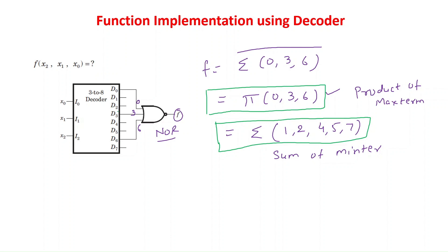I hope everyone gets clarity about decoders and the numerical problems on decoders. In the next video, we will see how to design higher order decoders with the help of lower order decoders — for example, how to design a 4×16 decoder using 3×8 or 2×4 decoders, and how to design a 6×64 decoder using 3×8 or 4×16 decoders.